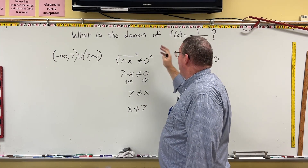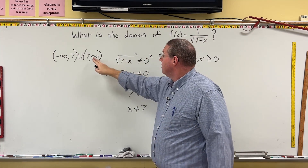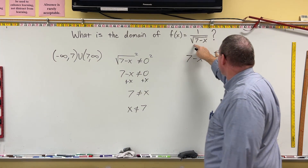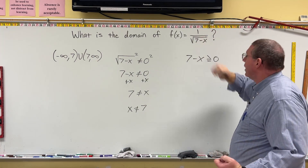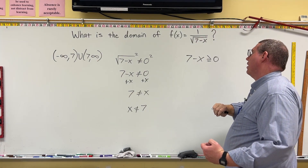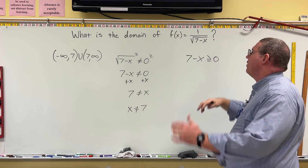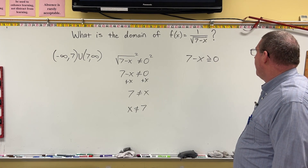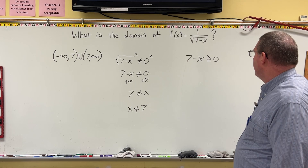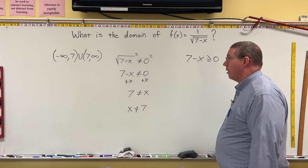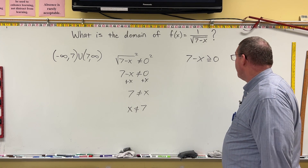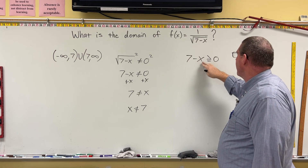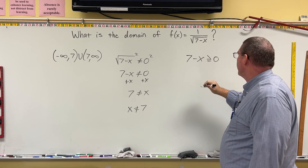For example, 10 is on this domain, but if I plug 10 in for x, 7 minus 10 is negative 3. We can't take the square root of negative 3, so we've violated the domain — we violated a rule of math.